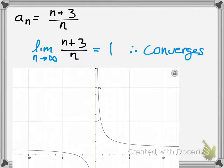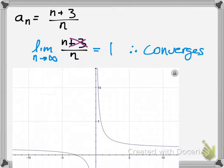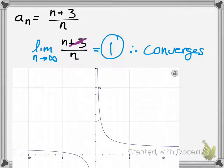One reason you can figure out this limit: think about as n gets super big, as it keeps approaching infinity, the numerator and denominator are both going to get infinitely big. The plus 3 doesn't really matter, because as both numbers get really big, they're going to be growing at the same rate. So algebraically, you can ignore the 3, and then n over n is 1 — the n's cancel and you get 1.